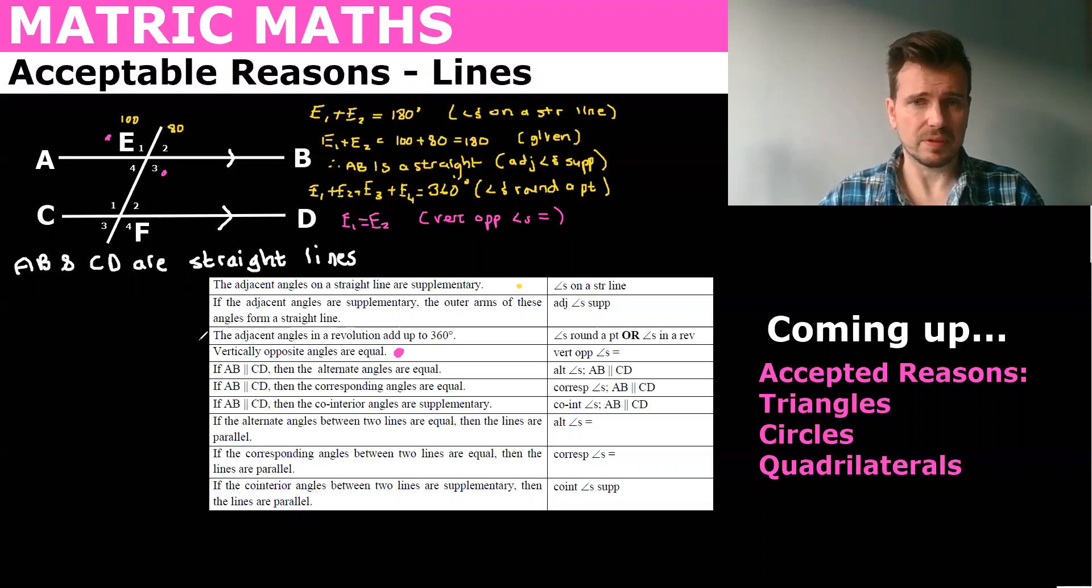And again you don't have to write alternate angles so what is an alternate that's your Z. Okay so we could say let's draw the Z in there. And so E4 equals F2 and we would say alt angles, AB parallel to CD.